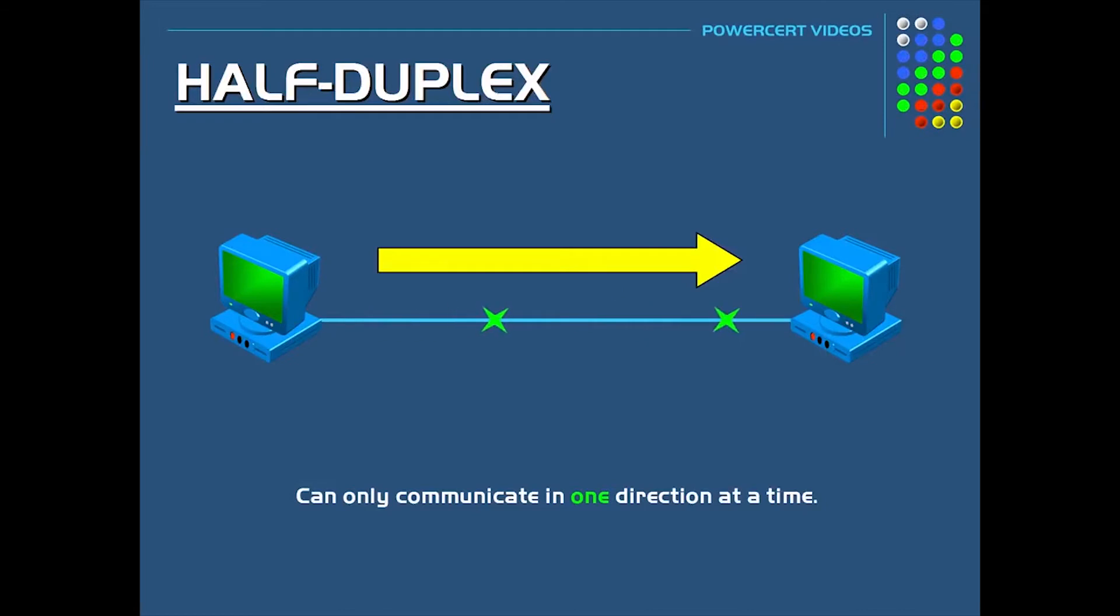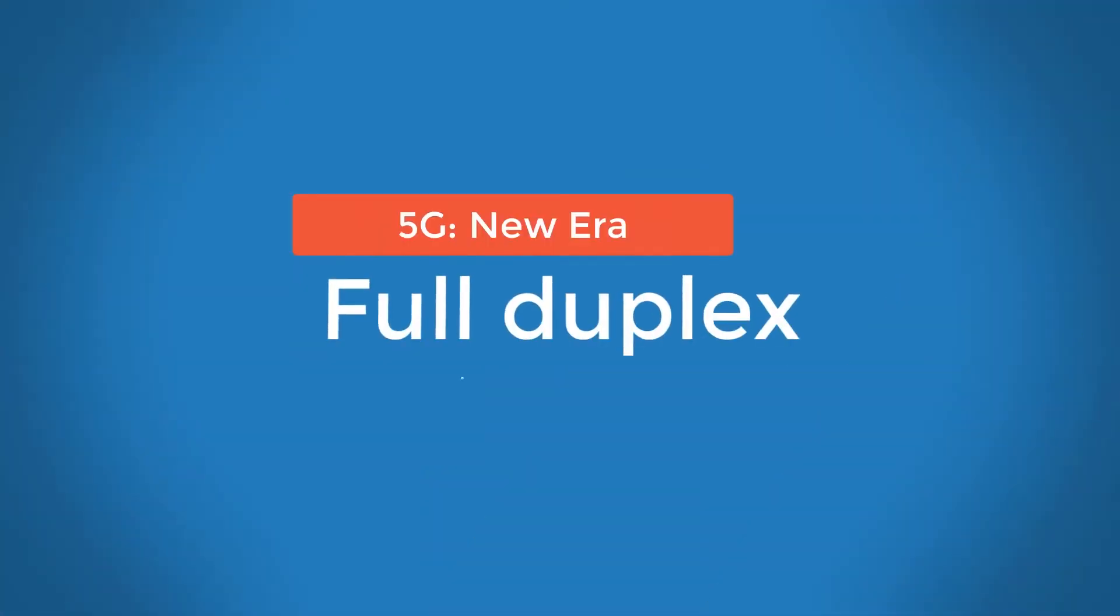But today's cellular towers come with a drawback. They can either send data or receive data at a particular frequency, but can't do both at the same time, which brings us to our last quirk: full duplex.